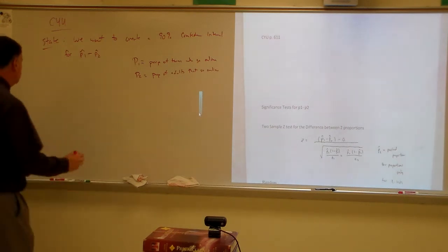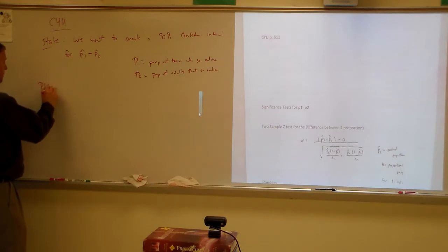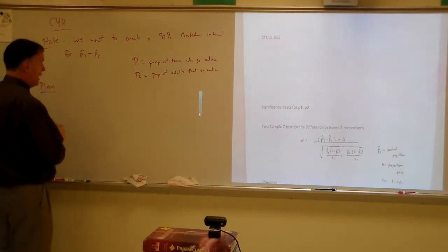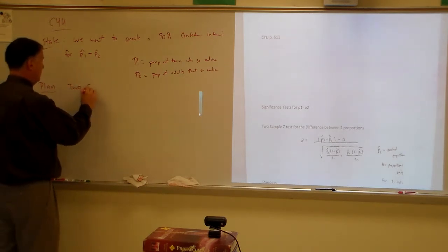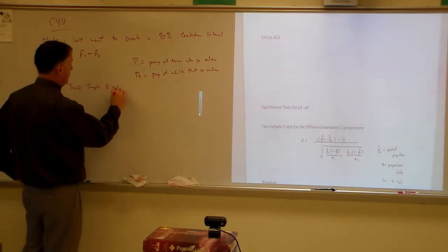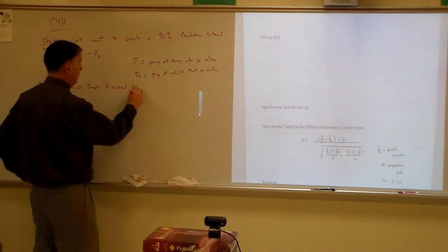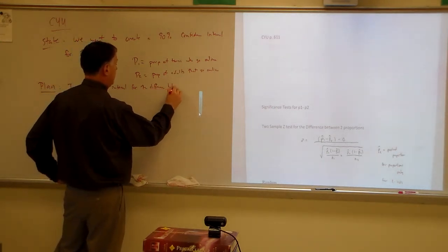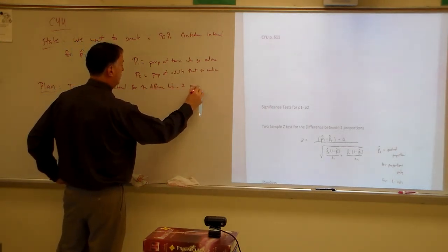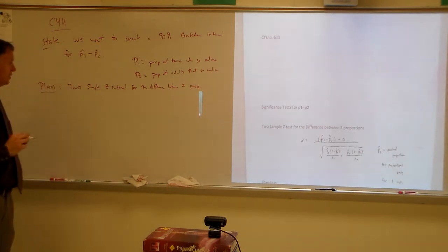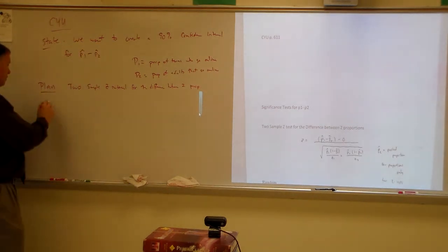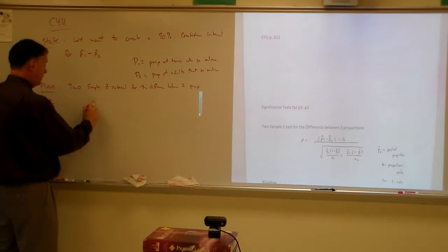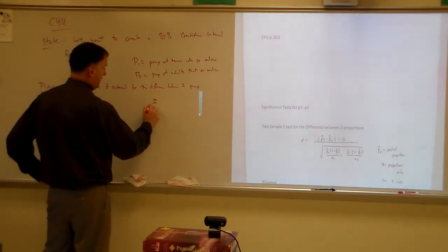Let's do our plan. Our plan is a two-sample z-interval for the difference between two proportions. Two-sample z-interval for the difference in two proportions, random, normal, and independent.